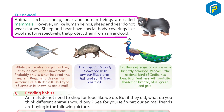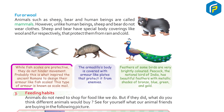Animals such as sheep, bear, and human beings are called mammals. However, unlike human beings, sheep and bear do not wear clothes — they have special body coverings like wool and fur respectively that protect from rain and cold. While fish scales are protective, they do not hinder movement. This possibly inspired the ancient Romans to design armor like fish scales, known as scale mail.